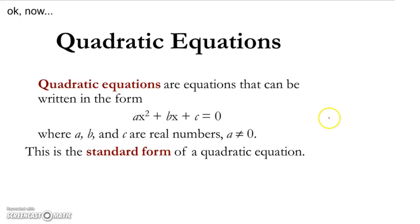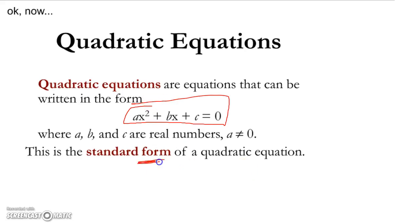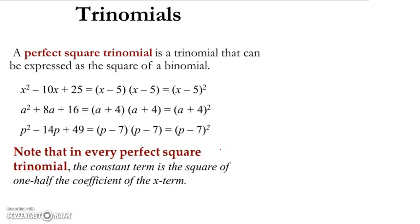One last point — this is the standard form for quadratic equations: ax squared plus bx plus c equals 0. It's called standard form. We'll talk about that in the next video. That pretty much finishes this video — I'll pick up where we left off. I hope this is making sense.